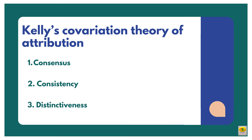The second theory is Kelly's co-variation theory of attribution. Here the focus is on three major types of information: consensus, consistency, and distinctiveness. Consensus is the extent to which other people react to a given stimulus or event in the same manner as the person we are evaluating. Consistency is the extent to which the person in question reacts to the stimulus or event in the same way on other occasions over time. Distinctiveness is the extent to which the person reacts in the same manner to other different stimuli or events.